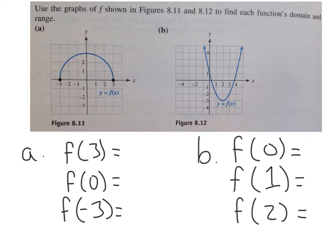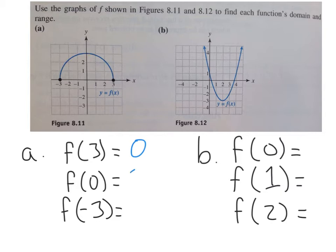You can also evaluate a function from its graph. If they ask for f of 3, just find x equals 3 on the graph and read the y value — y is 0, so f of 3 equals 0. For f of 0, go to x equals 0 on the graph; the graph is up at 3, so f of 0 equals 3. For f of negative 3, the graph is again at 0, so f of negative 3 equals 0.